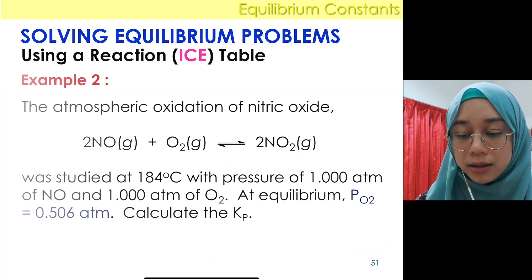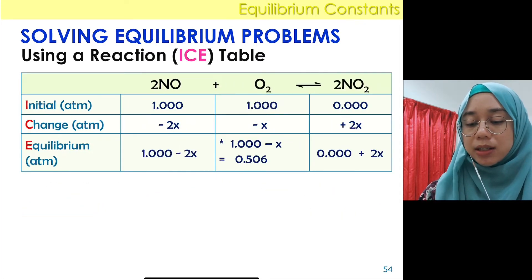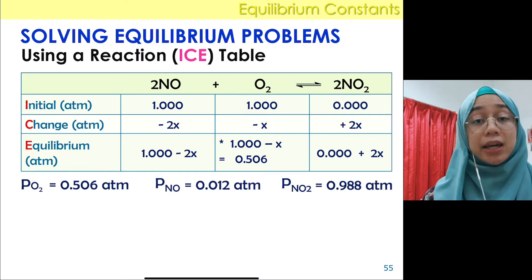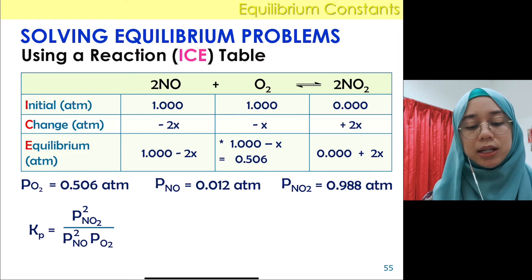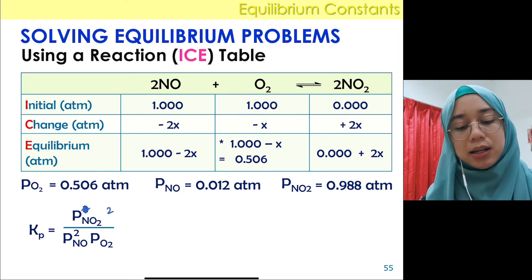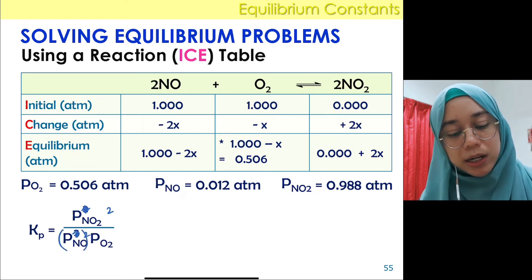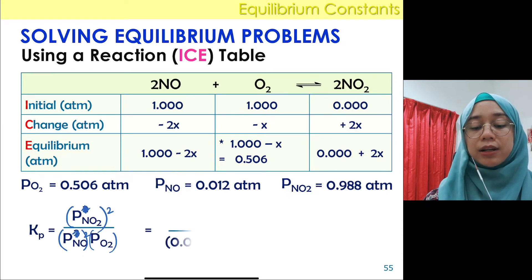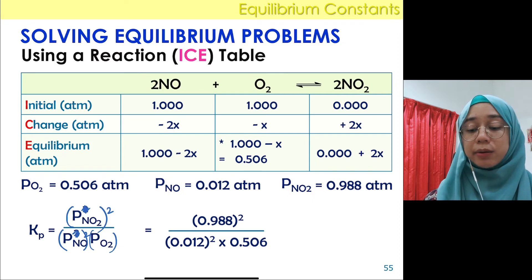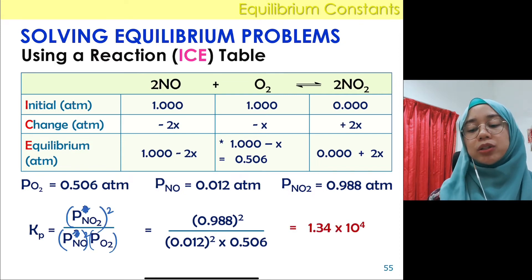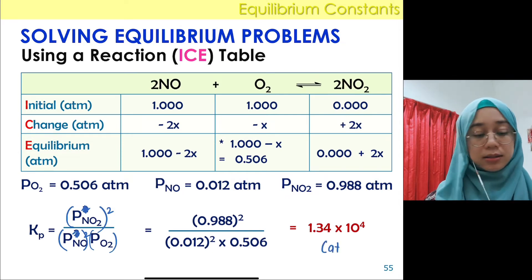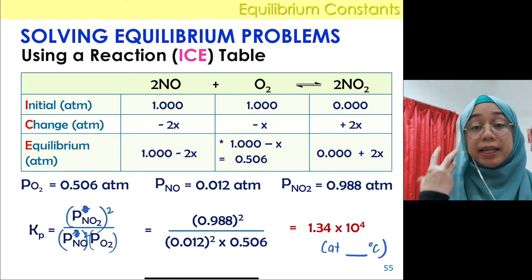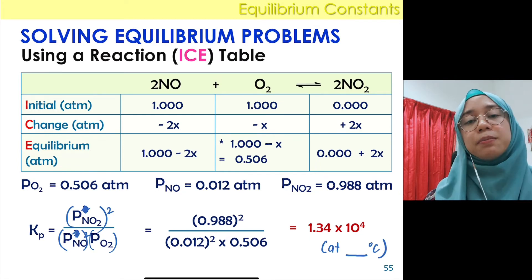Since the temperature is given as 184°C, express and calculate Kp. Kp = (P_NO₂)² / [(P_NO)² × (P_O₂)]. Insert the equilibrium partial pressure values: you will get Kp = 1.34 × 10⁴ at 184°C. Make sure to include the temperature in your answer since it was specified in the question.